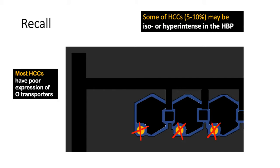How can this happen? There are two instances. First scenario is that some HCCs would have O transporters but no M transporters. So contrast remains here in the hepatocytes and it will remain hyper-intense in the hepatobiliary phase.